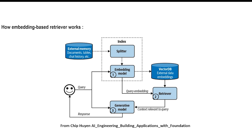Once the documents are split, each chunk is converted into an embedding — a numerical vector that captures the meaning of the text. These embeddings are stored in a vector database, which allows for fast similarity search when we need to retrieve relevant information. One example is FAISS, which we will use in the project. At this stage, our system has indexed the document and is ready to search when a user asks a question. When a user submits a query, the query is also converted into an embedding using the same embedding model, and sent to the retriever which searches the vector database to find the most relevant text chunks based on similarity.